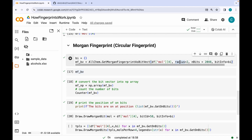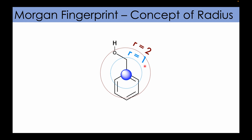The concept of radius can be a little tricky to understand, but I will explain it using benzyl alcohol. In Morgan fingerprint, the fingerprint generation starts by considering each atom in the molecule. The algorithm then explores atoms in the neighborhood of each central atom up to a specified radius. If the radius is one, it captures the information of atoms which are one bond apart — so for a central atom, it captures the methylene carbon and the two ortho carbons.